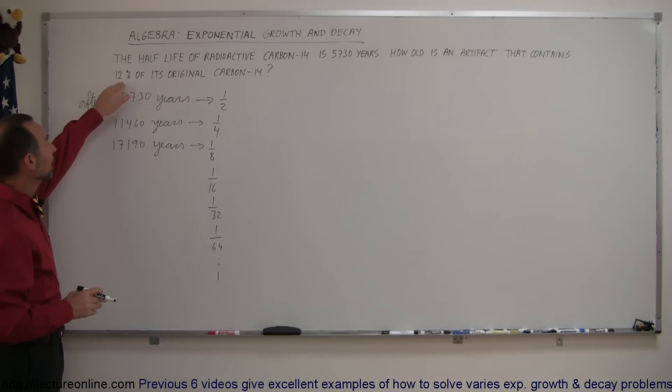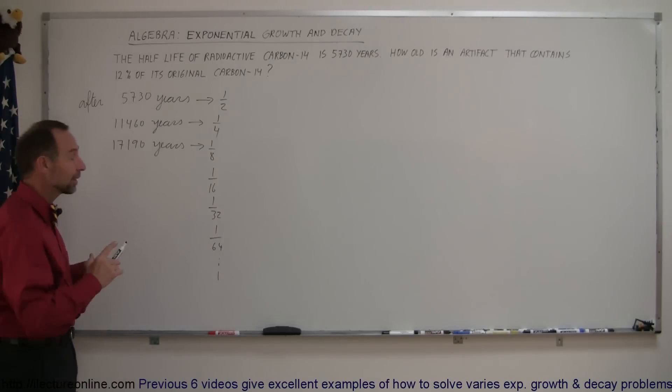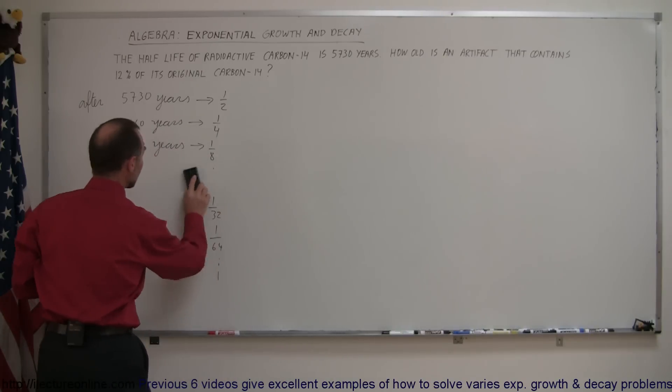So let's say we find something that contains 12% of its original carbon-14, so it has already lost 88% of what it started with when it was still alive. How old will it be now? Just like we did in the previous example, the first thing you want to do is find the decay constant k.